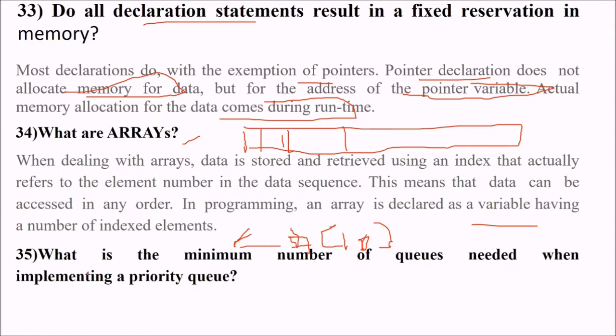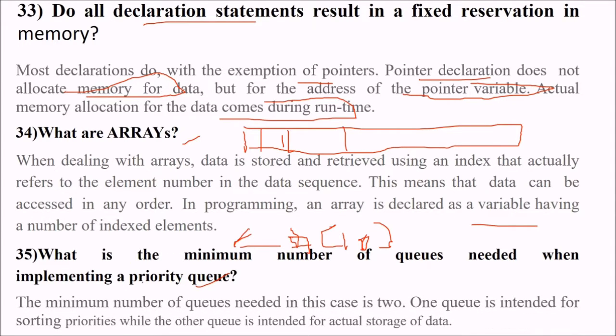35 is what is the minimum number of queues needed when implementing a priority queue? Of course, we have two - one queue is for the queue and one is for priorities. The minimum number of queues needed in this case is two. One queue is intended for sorting priorities while the other queue is intended for actual storing of the data.